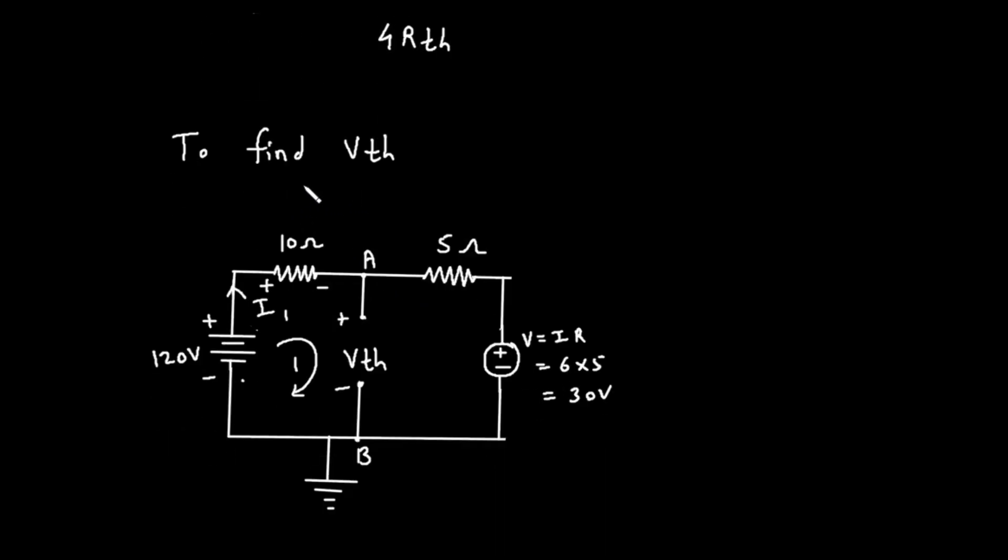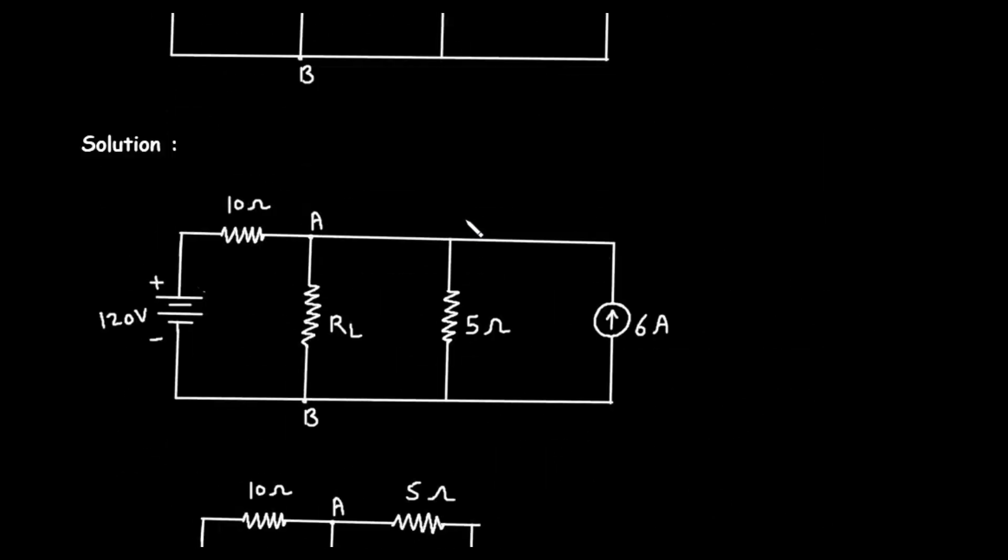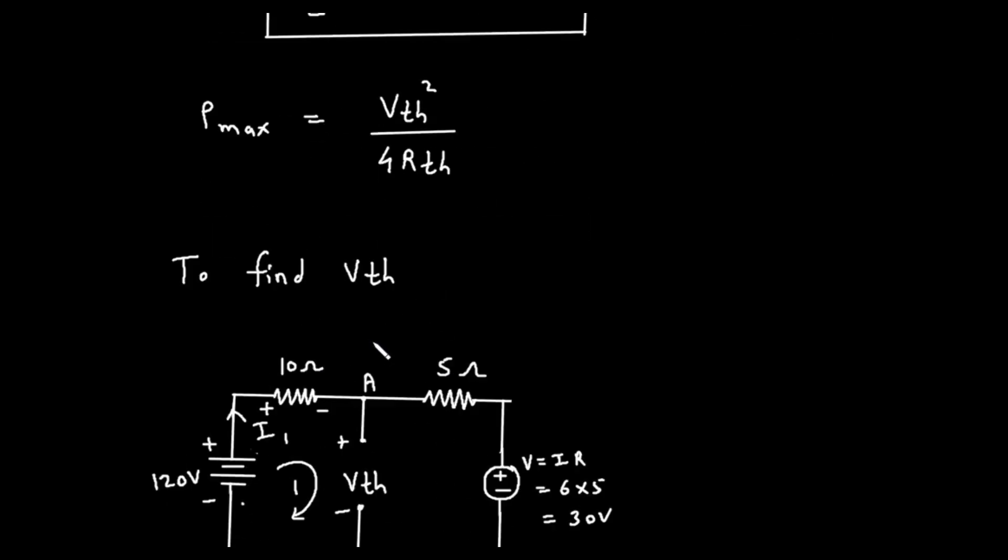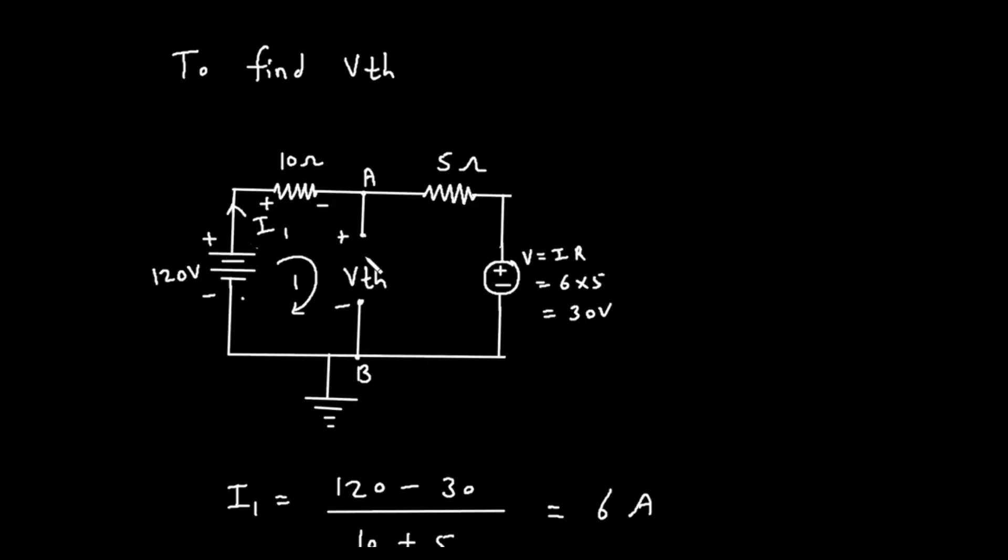The Thevenin voltage is the open circuit voltage across the terminals A and B. To find it, we go back to the original circuit and remove the load resistor RL, leaving the terminals A and B open. VTH is the voltage difference between point A and point B. The solution provided in the image takes a specific approach to find VTH. It first analyzes the rightmost part of the circuit. It calculates a voltage value by multiplying the 6 ampere current by the 5 ohm resistance. This is written as V equals A times R, which is 6 amps times 5 ohms, giving a result of 30 volts. This 30 volt value is then used to calculate the current flowing through the left loop of the circuit, which is labeled as I1.